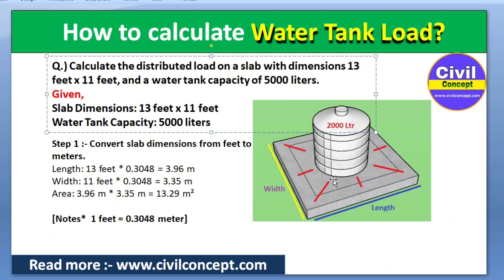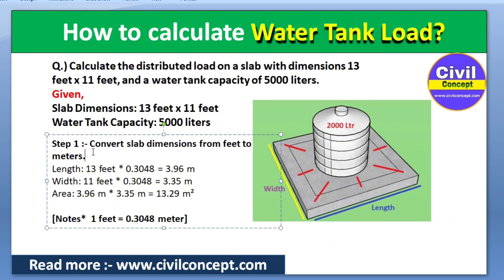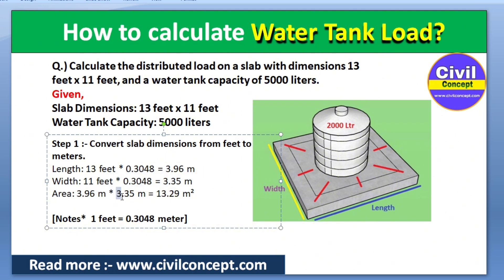In Step 1, we convert the slab dimensions from feet to meters. Since 1 foot equals 0.3048 meters, the length of 13 feet equals approximately 3.96 meters. Similarly, the width of 11 feet equals 3.35 meters. Calculating the area — length times width — gives us 3.96 × 3.35, which equals approximately 13.29 square meters.